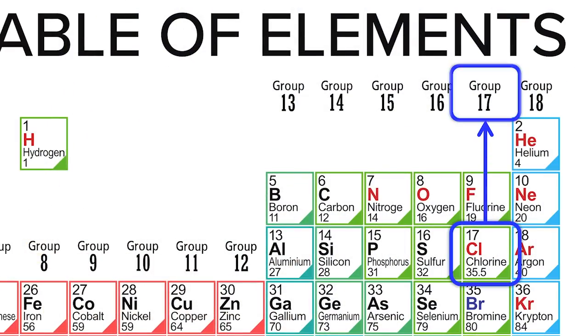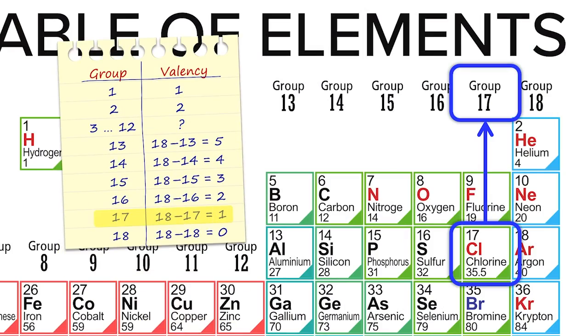Chlorine belongs to group 17, so its valency is 18 minus 17, equals to 1.